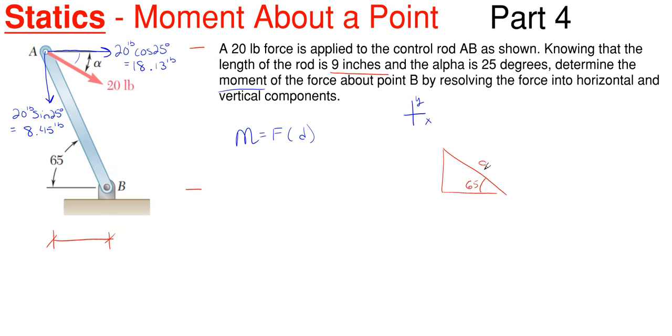If we were to complete the overall triangle here, this would be 65 degrees, this would be 9 inches, and then we would use sine and cosine of the right triangle rule to get our vertical and horizontal distances there.